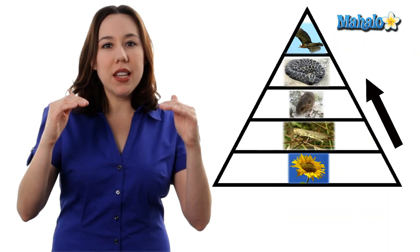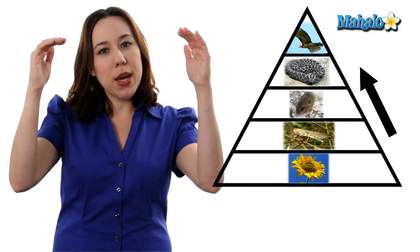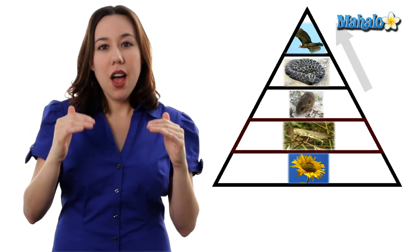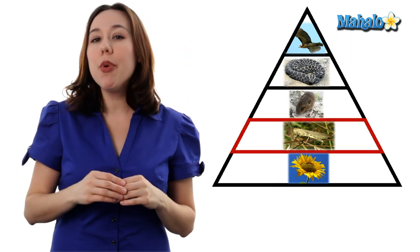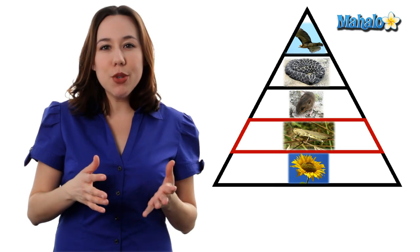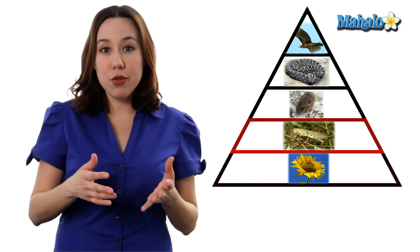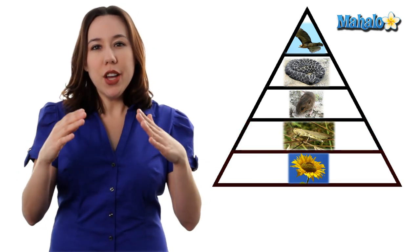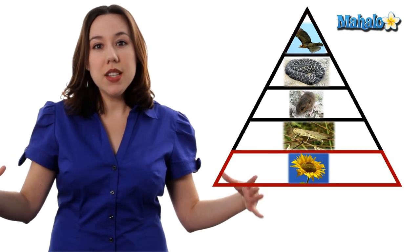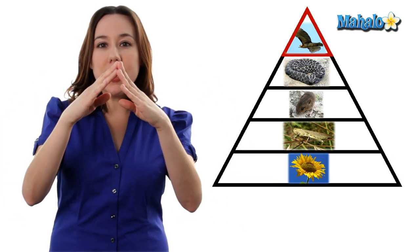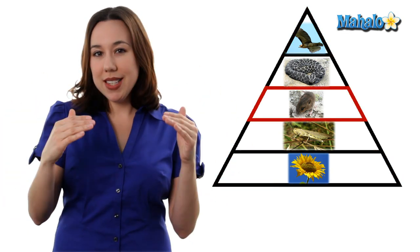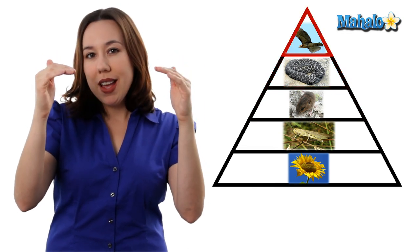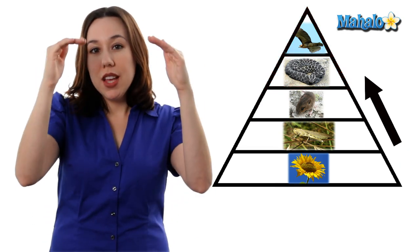As you move up the food chain towards that apex predator, you're seeing lots of different consumers past those producers. Our first level consumer is our primary consumers. These consumers are going to consume the producers at the very bottom. Think of it kind of like a pyramid, going from the very large at the bottom to the very pinnacle at the top. We also have secondary, tertiary, and our quaternary or fourth level consumers.